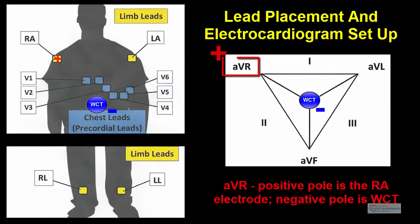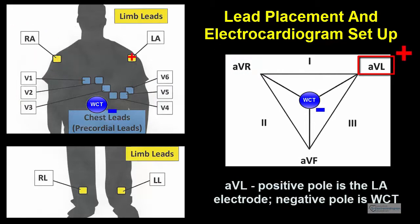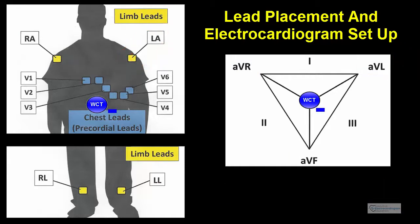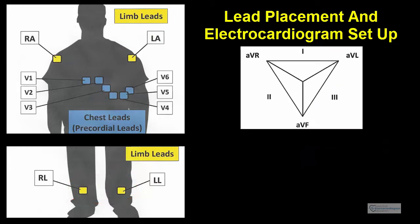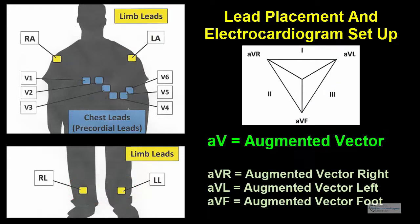With lead AVR, the positive pole is the right arm electrode. With lead AVL, the positive pole is the left arm electrode. With AVF, the positive pole is a leg electrode. The AV stands for augmented vector. AVR means augmented vector right, AVL means augmented vector left, and AVF means augmented vector foot.